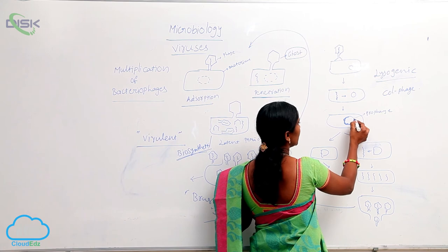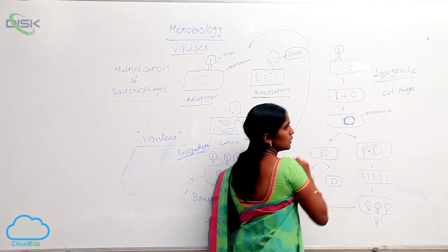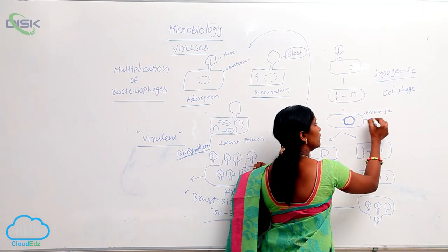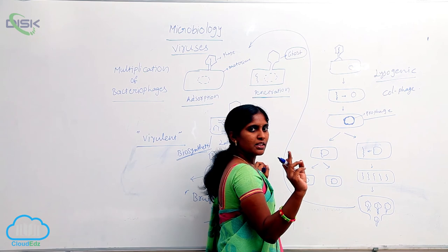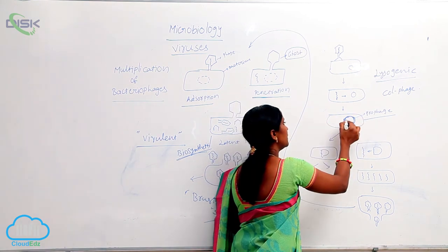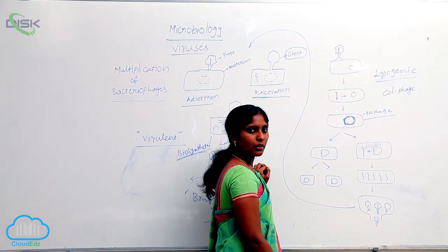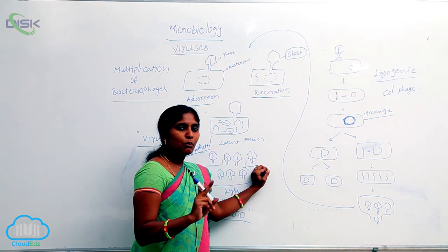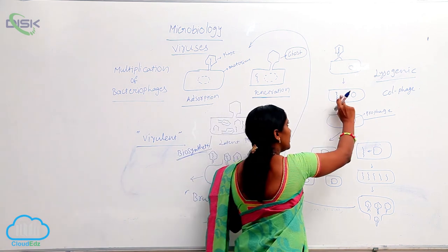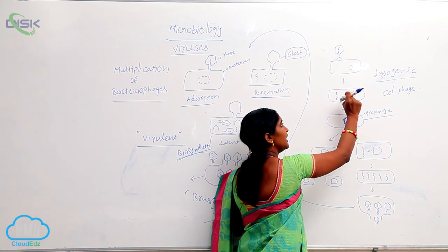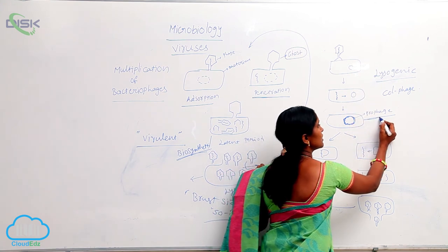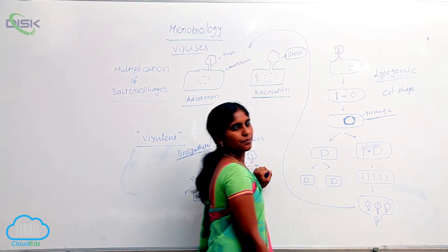The viral DNA joins with bacterial DNA to form a hybrid DNA. This hybrid DNA is called prophage DNA. The DNA present here is partly bacterial and partly viral — it is a combination, a mixture, a hybrid DNA. The entry of viral DNA integrates into the bacterial DNA and forms a hybrid DNA that is called a prophage.